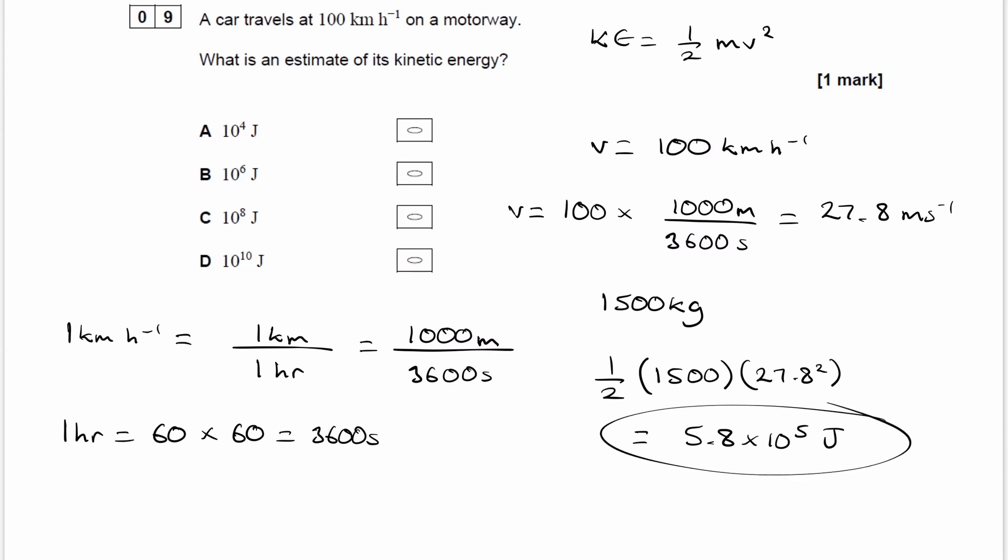So this value for kinetic energy is somewhere in between 10 to the power of 4 and 10 to the power of 6. So if I were to do 10 to the power of 6 divided by 5.8 times 10 to the power of 5,